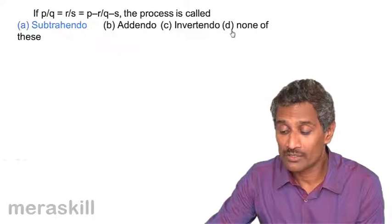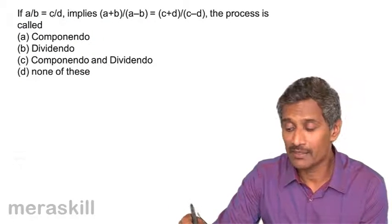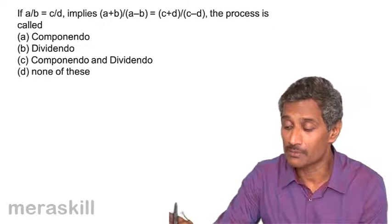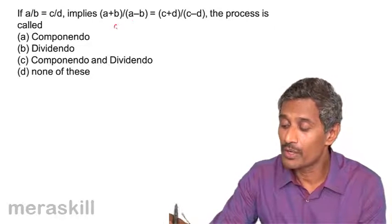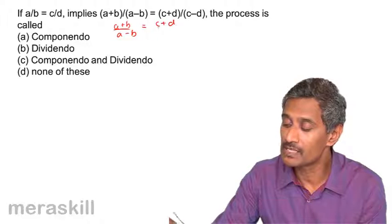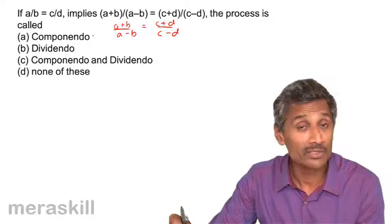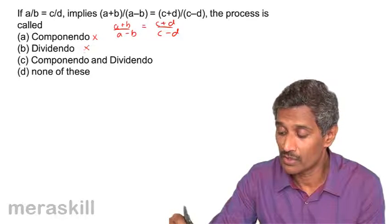So let's check what the next question we have. a by b is c by d. So a, b, c and d are in proportion is equal to a plus b upon a minus b, c plus d upon c minus d. So the process is called definitely not componendo, definitely not dividendo.